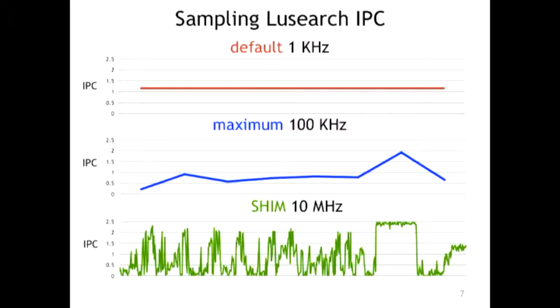You can run statistical analysis tools to figure out patterns. For example, building an FFT model to find patterns — as electrical engineers use a lot. You can see there are periods where the IPC goes very high. If you check which methods are executing at those times, you can get a lot of information. So why does perf, the most popular tool, not allow you to push to 10 megahertz?